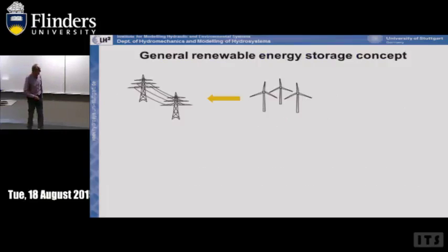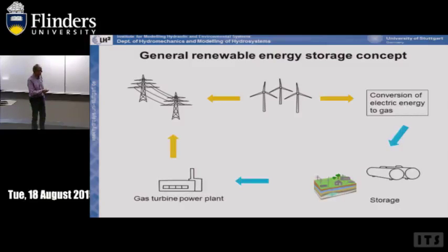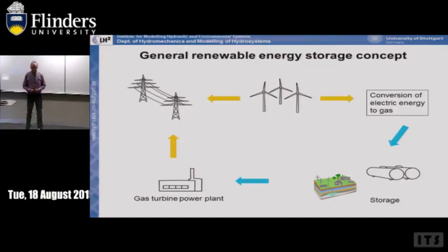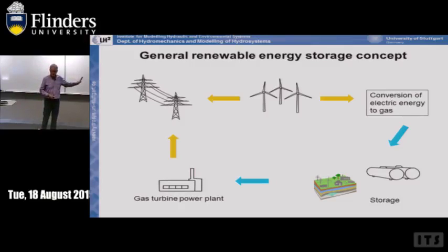The main idea is conversion of electric energy into gas — store it, then produce it again from a gas turbine when necessary. The efficiency of this process is approximately 40%, which is comparable to a coal power plant efficiency of 36-38%. So in general we have four possibilities for energy storage: conventional underground storage with gas power plants; classical compressed air energy storage; power-to-hydrogen stored underground; and power-to-gas methane with existing infrastructure.